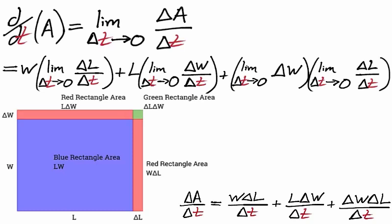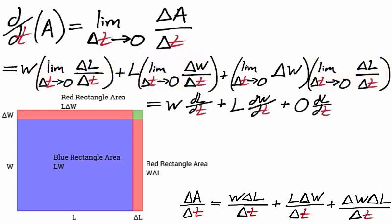Since w and l are differentiable functions of t, their derivative with respect to time t exists. Hence the limit of their average rates of change over time exists. So the derivative of area is the width times the derivative of length plus the length times the derivative of width.